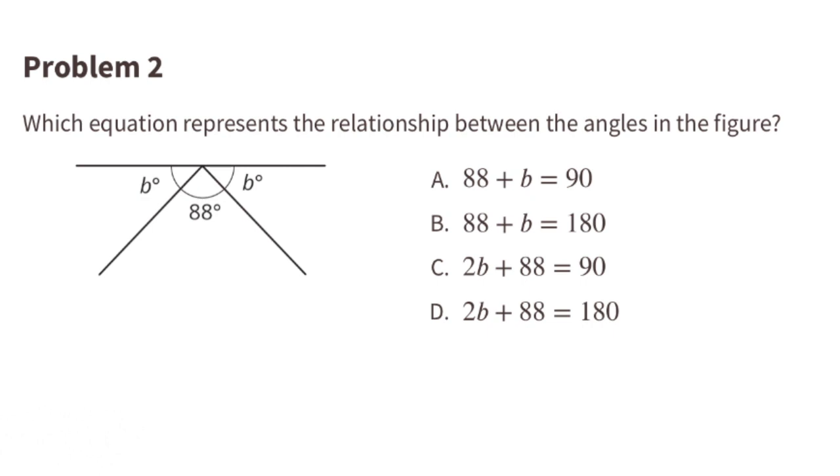Problem number 2. Which equation represents the relationship between the angles in the figure? The figure shows 1B plus 88 plus 1B. That's equivalent to 2B plus 88, so we know it's not equation A or equation B. Look at the figure one more time. Look at the straight line. 1B plus 88 plus 1B. That totals 180 degrees, because that makes a half circle. So the equation that represents the figure is equation D. 2B plus 88 equals 180.